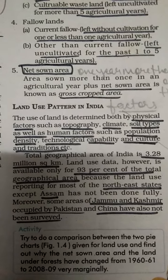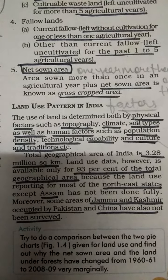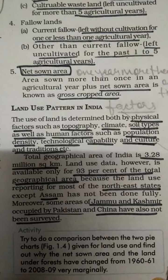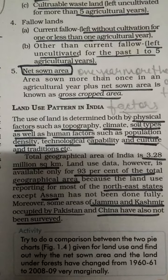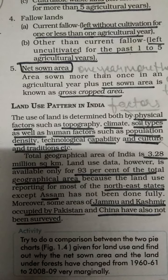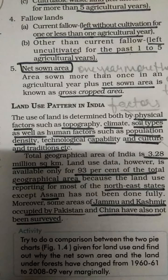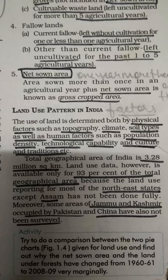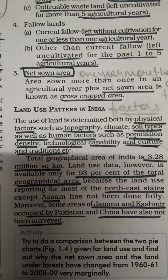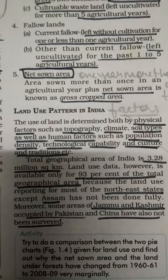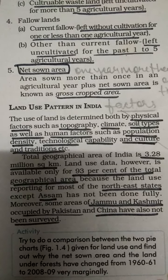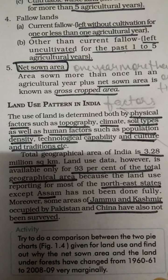Punjab and Haryana have comparatively developed planes and better technology so they grow more crops. The total geographical area of India is 3.28 million square kilometers. However, land use data is available only for 93% of the total geographical area.